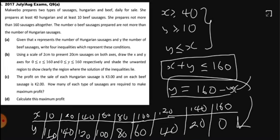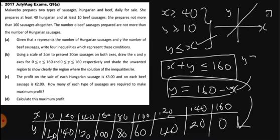Now, Y less than or equal to X is the same as Y equals X — a straight line passing through the origin along the X-Y plane. It's a straight line passing diagonally. Let's see how we can draw this graph.